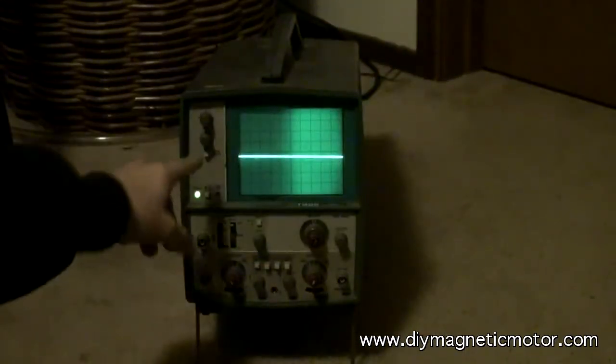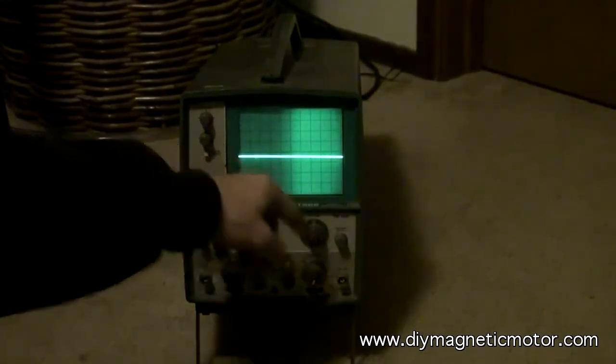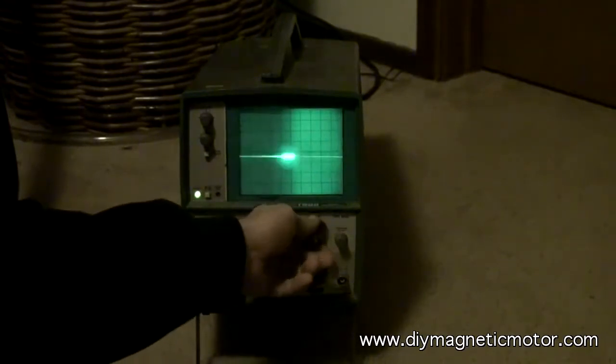But this is a ring of energy. So when we are seeing a linear projection on this oscilloscope, we see a dot going from left to right.